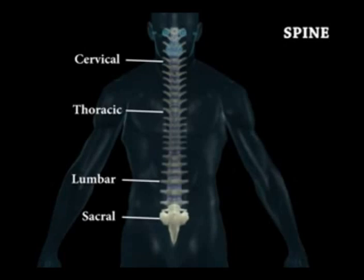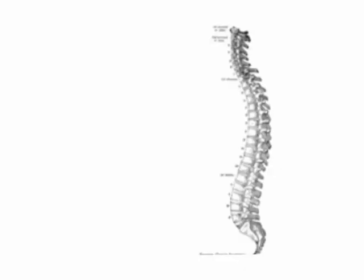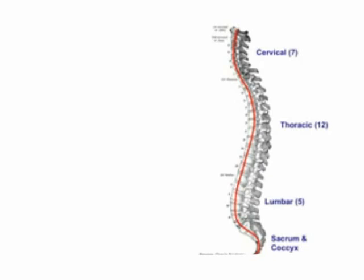The vertebral column consists of individual vertebrae and intervertebral discs. When viewed laterally, it is seen to consist of various curvatures. The cervical region consists of 7 vertebrae, the thoracic region consists of 12, the lumbar region consists of 5, and lastly we have the sacrum and coccyx which are 2 composite bones.